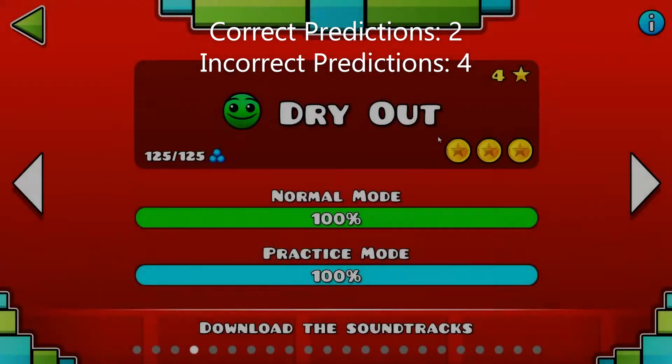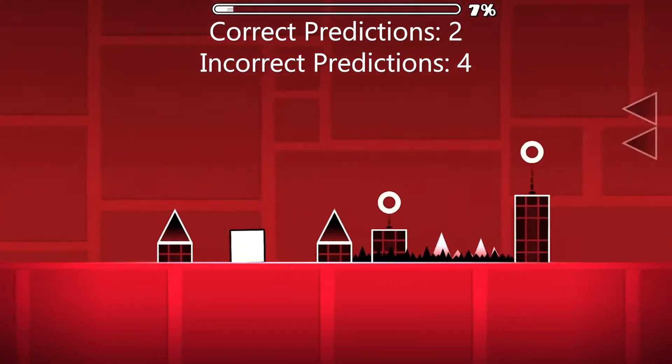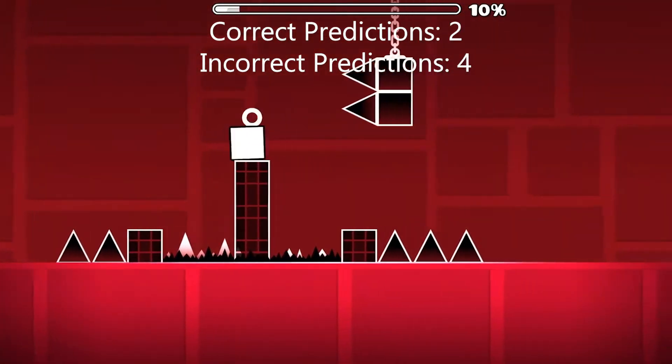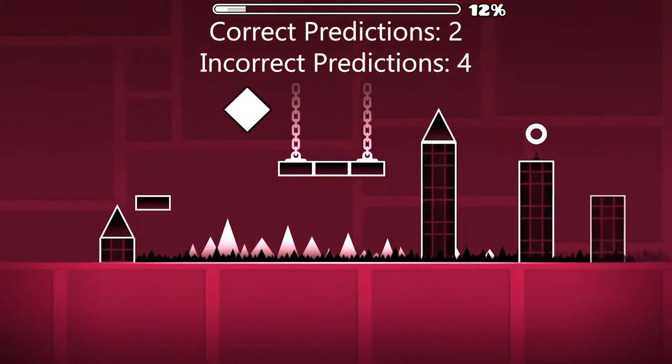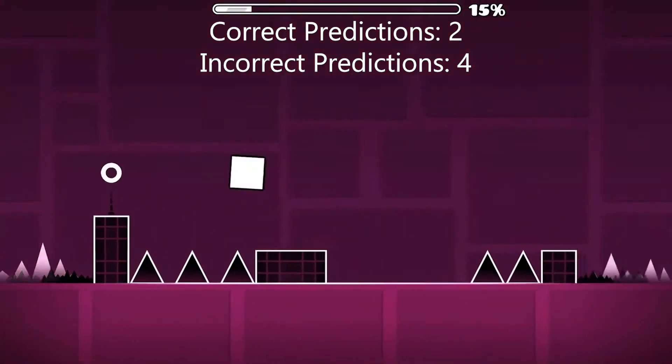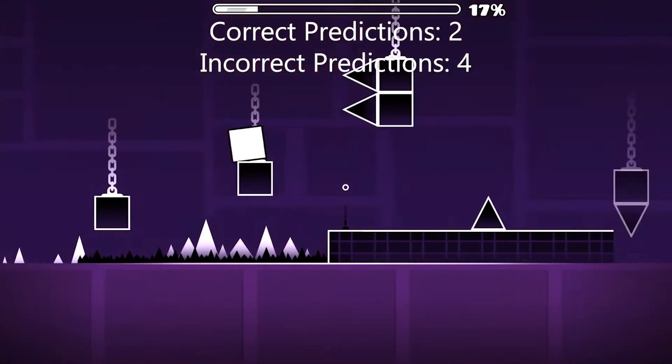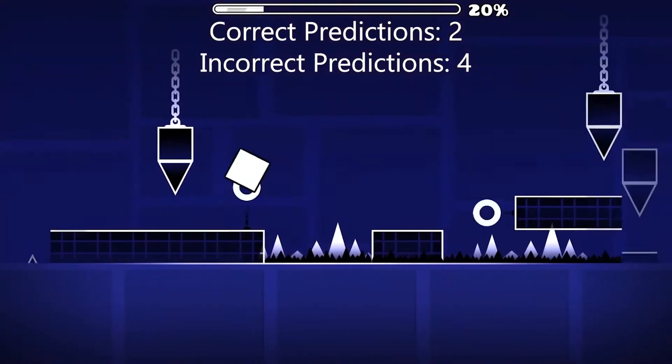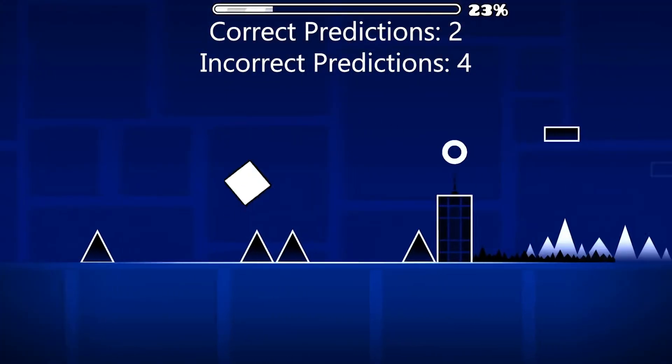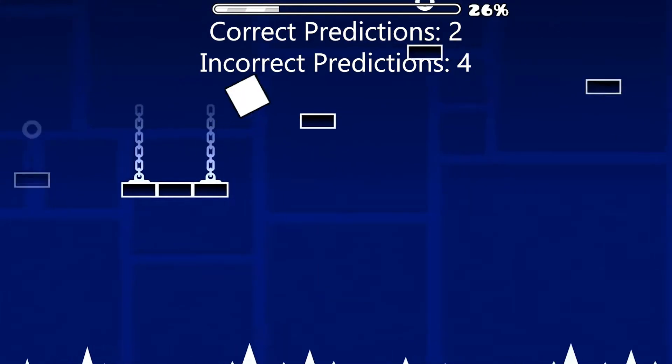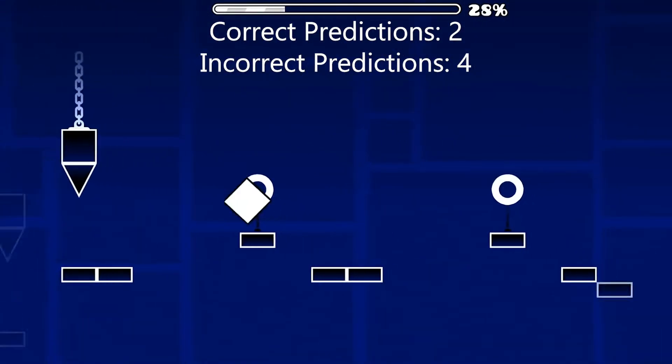Another prediction I have is about how many extreme demons there will be in this game at the end of 2021. Right now at the moment there are about 300 extreme demons in Geometry Dash that you can go ahead and try to beat right now.